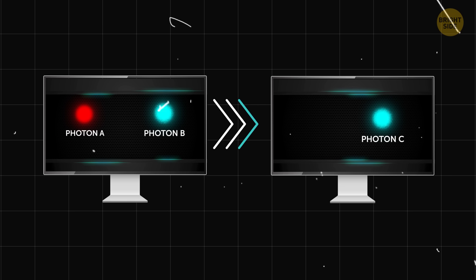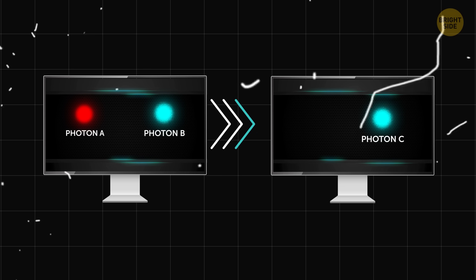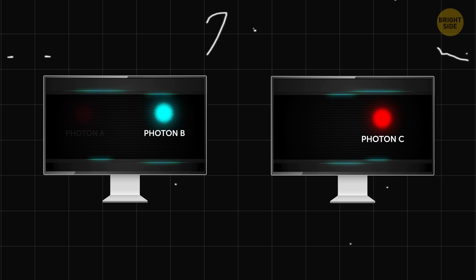Then, you send information about the interaction of photons A and B to another computer. Photon C reads this information and takes the form of photon A. The original photon A disappears, and photon C becomes photon A.